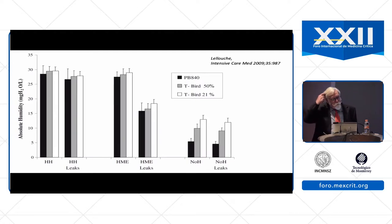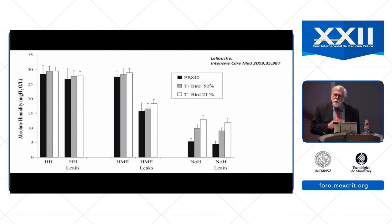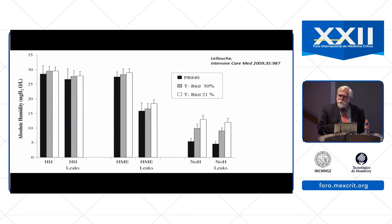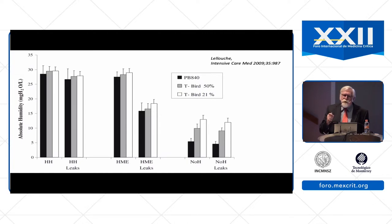This is another study by the same group, published about 10 years ago, looking at the effect of leak during non-invasive ventilation with a heat and moisture exchanger versus a heated humidifier. With the heated humidifier, if there are leaks, the delivered humidity remains relatively constant. However, with the heat and moisture exchanger, if there are leaks, there is a substantial decrease in the amount of humidity delivered. Again, this is because the performance of the heat and moisture exchanger requires that the patient breathe in and out through the device, and if there are leaks in the system, that defeats its performance.